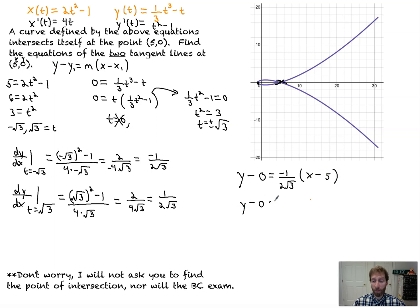We still are at the same point, but we have a second slope coming out of that loop of 1 over 2 root 3 times (x minus 5). And those are our two equations of our tangent lines, one going entering, the other exiting the loop.